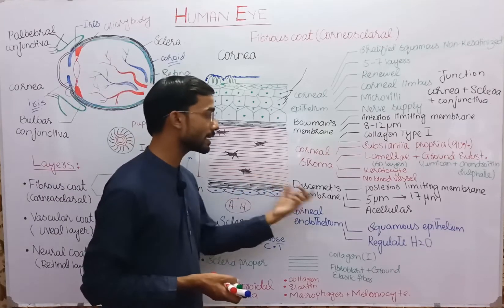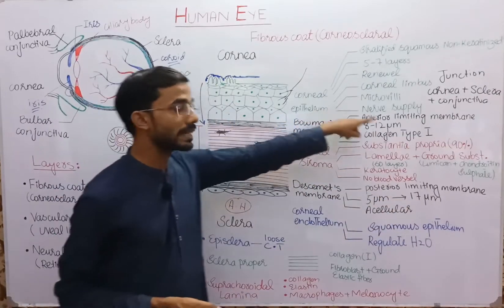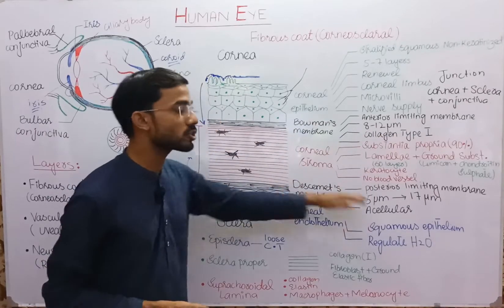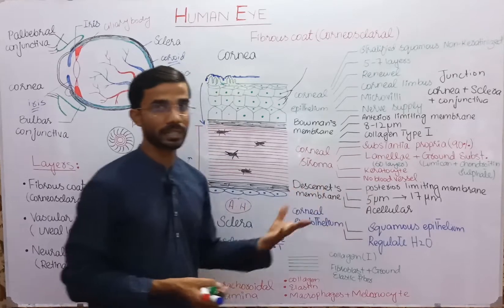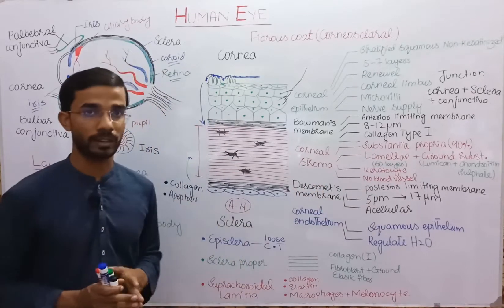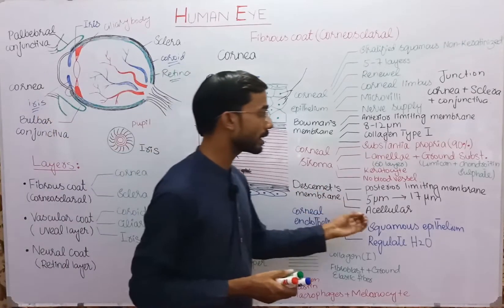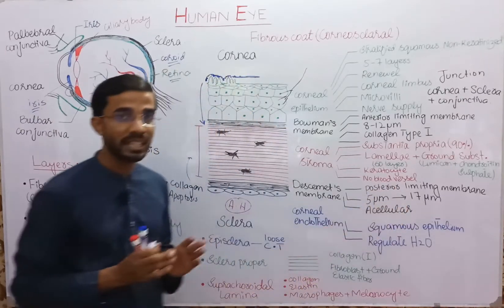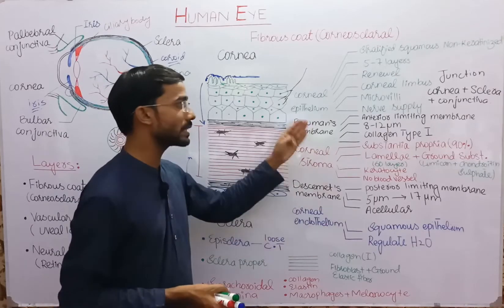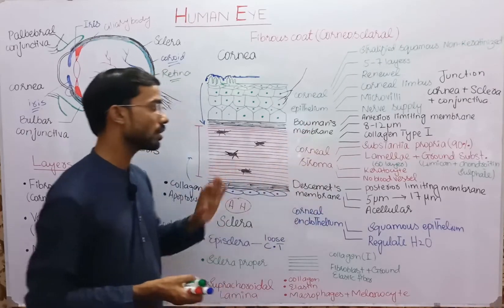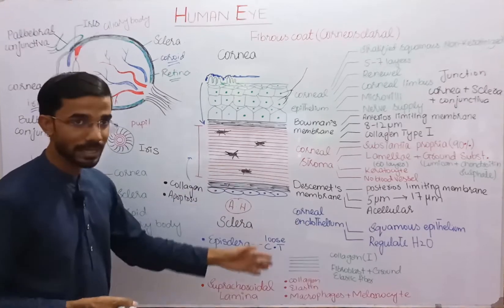The next layer is Descemet's membrane, which is the posterior limiting membrane — Bowman's membrane is anterior limiting and this is posterior limiting. Its thickness is 5 micrometers in children, but with age it increases to 17 micrometers. It is acellular, meaning no cells are present in this membrane.